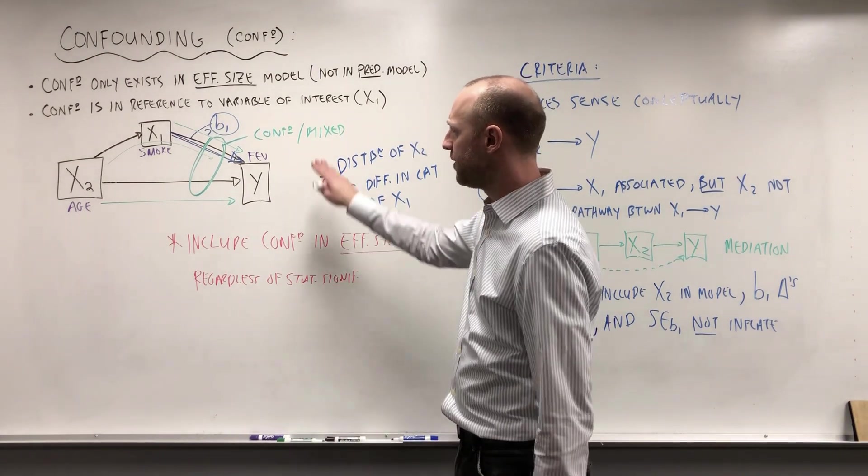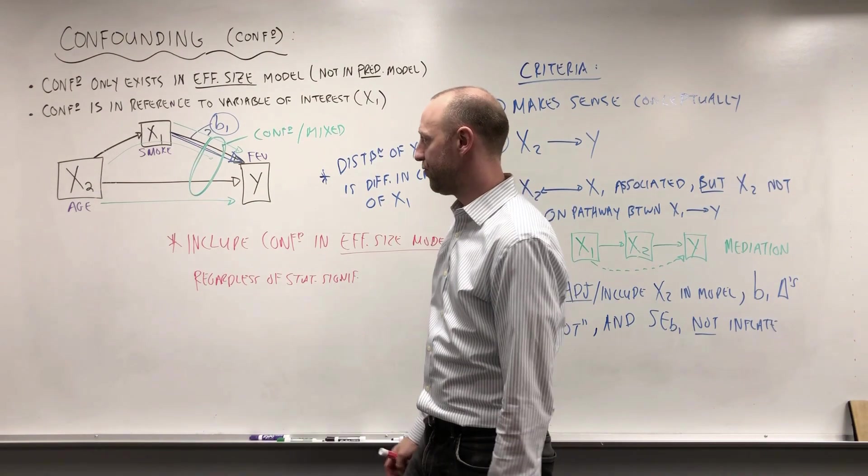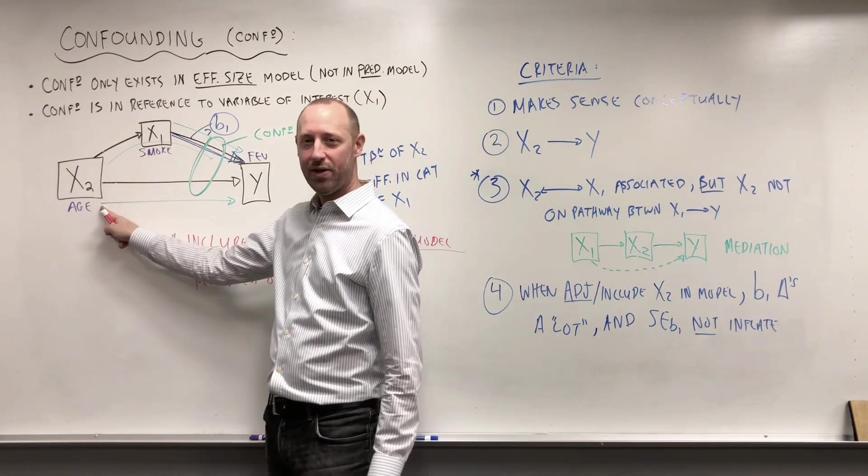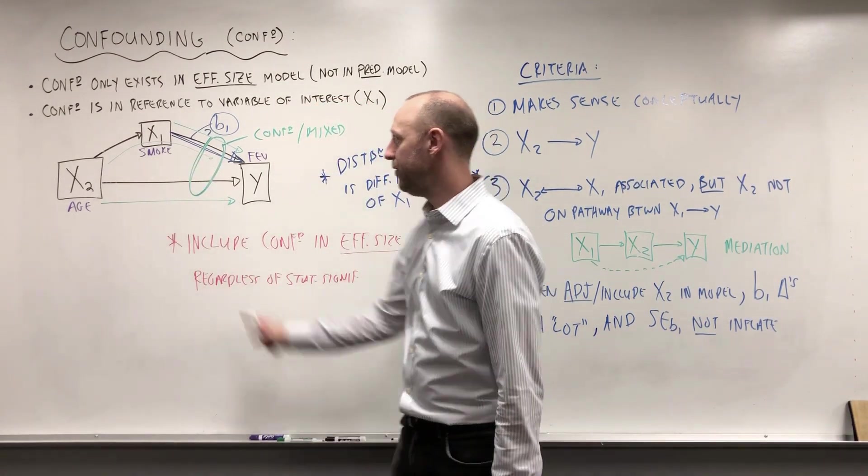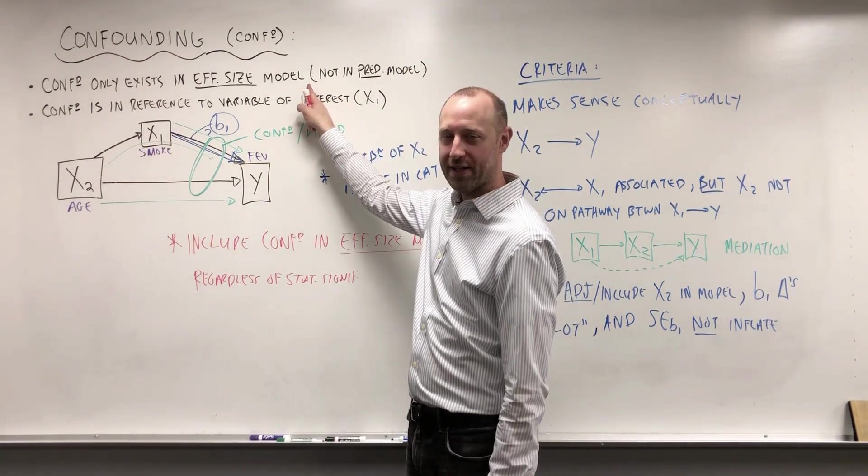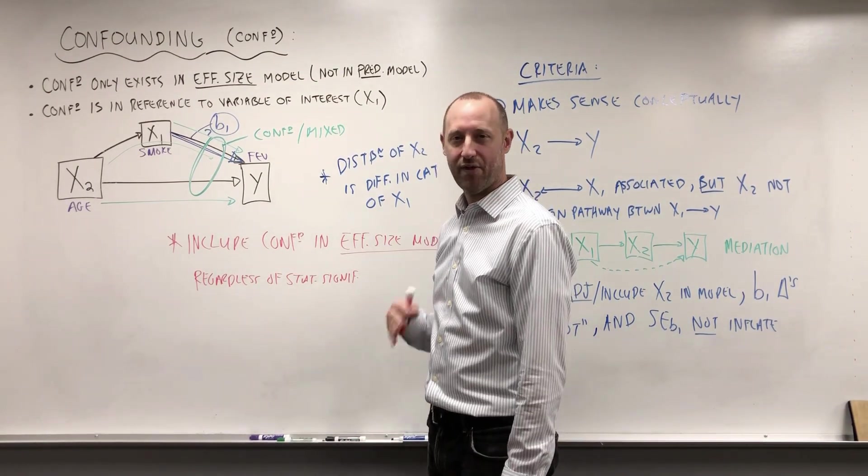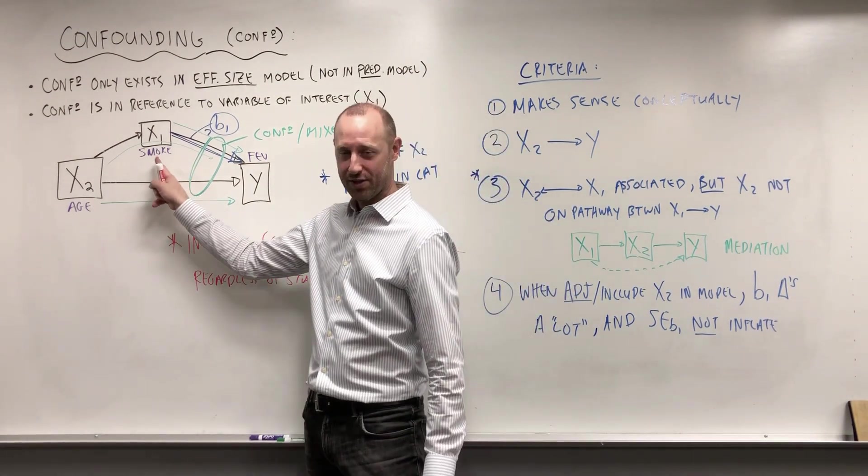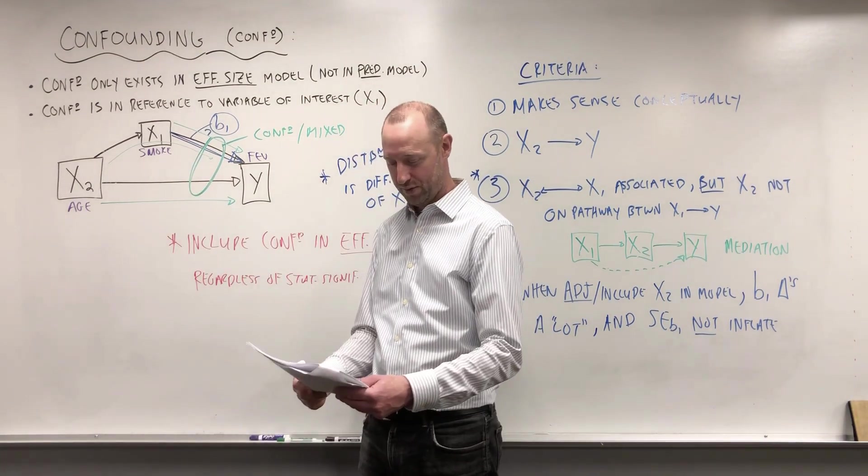I want to put a reminder that confounding is specific to individual variables. Age may be a confounder of the smoking effect, but age may not be a confounder of the sex effect. So calling something a confounder is in reference to a particular variable. And reminder, confounding is specific to effect size models. If we're looking to predict an outcome, it doesn't really make sense to label a variable as a confounder, because confounders are specific to certain variables. If we're not going to interpret the effect of certain variables, it makes no sense to refer to confounding.